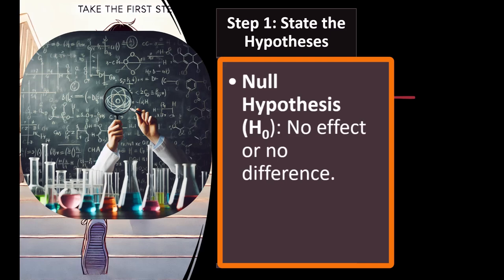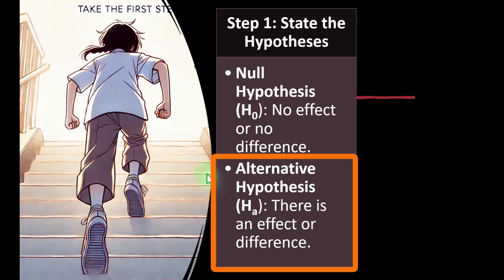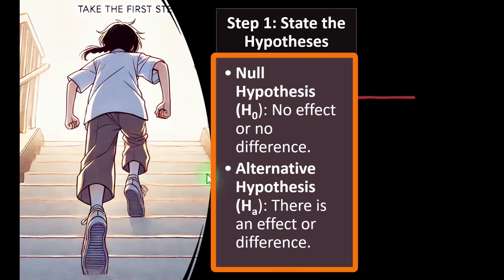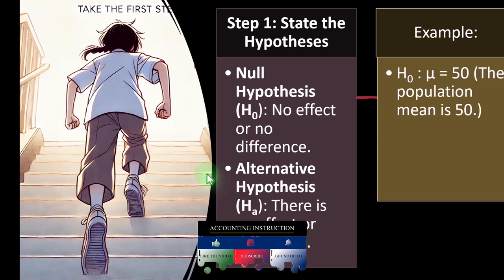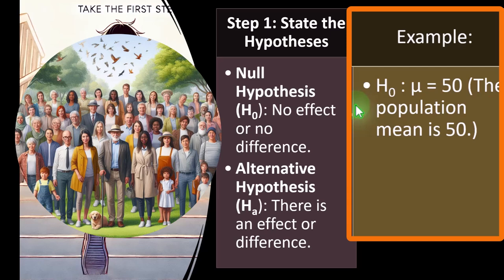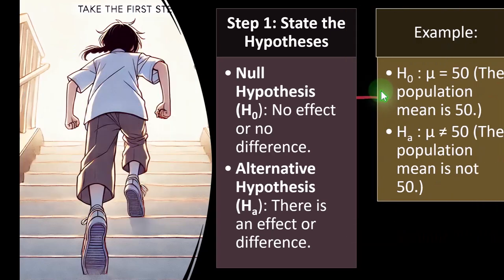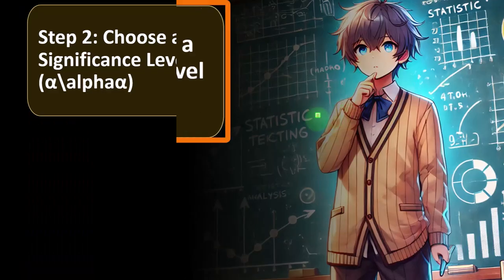We're testing one thing at a time using a scientific method — in this case, whether the national average height applies to our region. That national average is our null hypothesis: that our regional average is no different. The alternative hypothesis H-sub-a states there is an effect or difference. If we find enough data to reject the null, the alternative applies. For example, H₀: mu equals 50, meaning the population mean is 50; H-sub-a: mu does not equal 50, meaning the population mean is not 50.